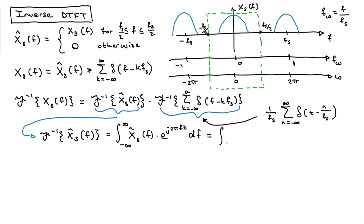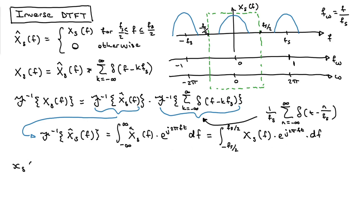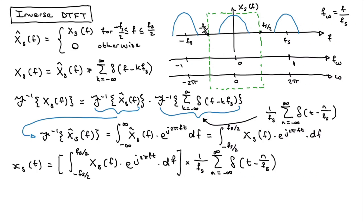Because this is the windowed signal, the integral only runs from -Fs/2 to Fs/2 (it's zero everywhere else). So the inverse Fourier transform of X̂_S(F) is just the integral from -Fs/2 to Fs/2 of the actual sampled signal spectrum. Plugging both pieces together gives me x_S(t).